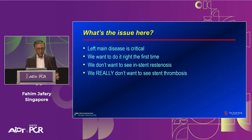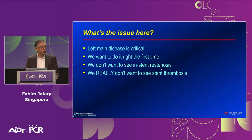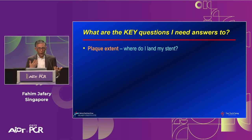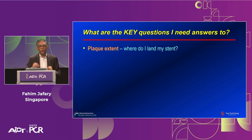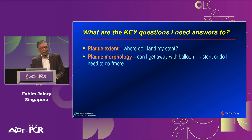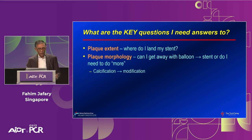The issue is left main disease — it's critical, and we want to do it right the first time. We don't want in-stent restenosis or stent thrombosis. The key questions are: what is the plaque extent and where do you land your stent? Landing in a diseased vessel is bad; landing in a clean, normal zone gives better outcomes. What is the plaque morphology — can I get away with balloon and stent, or do I need calcium modification or rotational ablation? That's what IVUS will tell you.